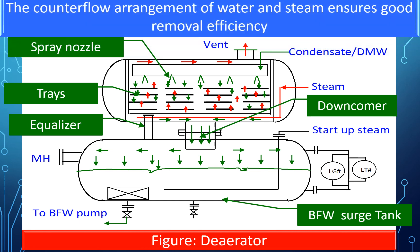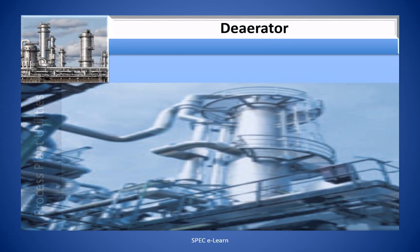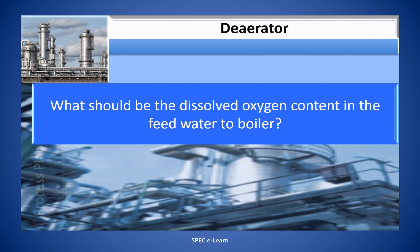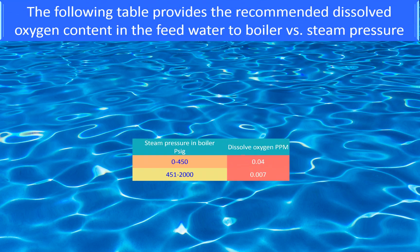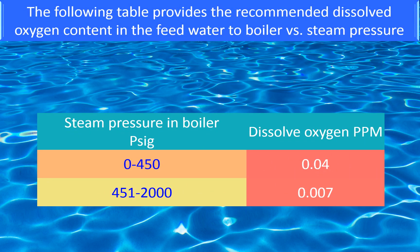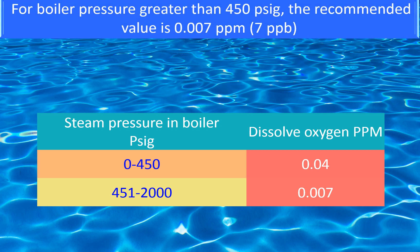The counter-flow arrangement of water and steam ensures good removal efficiency. ASME provides the standard for condensate and boiler feed water quality in terms of boiler pressure. For boiler pressures up to 450 PSIG, the recommended dissolved oxygen should be less than 0.04 ppm, i.e., 40 ppb. For boiler pressures greater than 450 PSIG, the recommended value is 0.007 ppm, i.e., 7 ppb.